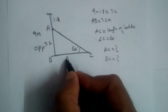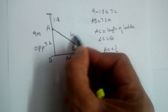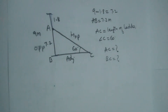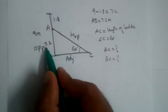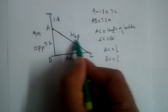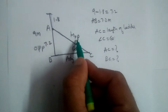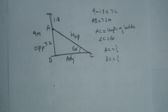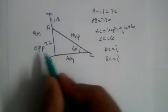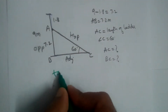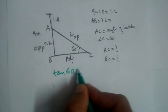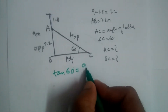To angle C, AB is the opposite side, BC is the adjacent side, and AC is the hypotenuse. We can either find the hypotenuse first or the adjacent first — it's a personal choice. Let's find the adjacent side first. Opposite over adjacent uses the tan formula, so tan 60 equals opposite divided by adjacent.